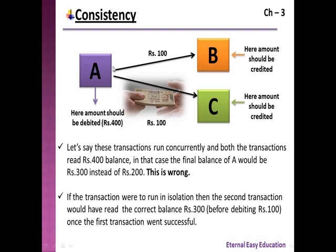Let's see an example. There are accounts A, B, and C. Account A is transferring 100 rupees to B and again 100 rupees to C. The balance of A is 400 rupees. If both transactions run concurrently — meaning both transactions read the balance of 400 at the same time — then the final balance of A would be 300 rupees instead of the correct 200 rupees. This is wrong.